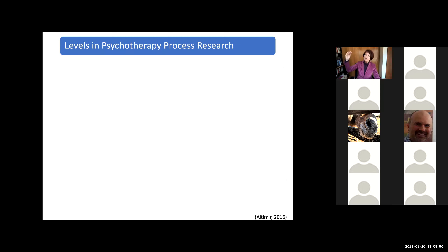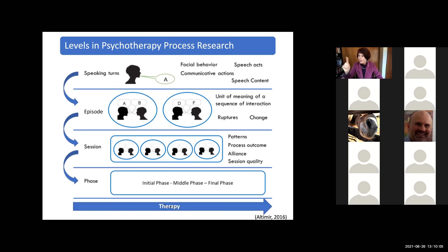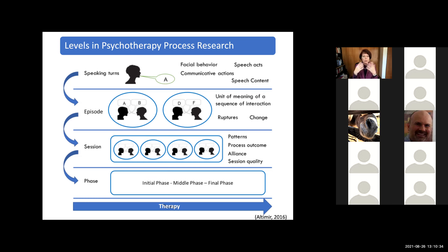We need to distinguish different levels in process research, and as you will see in the specific studies, they usually mix levels — they don't focus only on one. We can distinguish speaking turns, episodes, sessions, and phases of therapy. On speaking turns, we could study facial behavior or speech content. On the level of the episode, we could study ruptures or change episodes. At the session level, we can see patterns, evaluate the alliance, and evaluate session outcome or quality. On the whole therapy level, studies usually distinguish between initial, middle, and final phases.